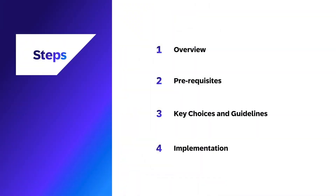Our discussion will follow these four key steps. First, we'll provide an overview of anomaly detection and its benefits in the SAP ecosystem. Second, we'll cover the essential prerequisites you'll need to have in place, including supported environments and required components. Third, we'll explore key choices and guidelines that impact your implementation, including algorithm selection and parameter optimization for different use cases. Finally, we'll dive into implementation approaches across programming models, providing concrete examples for Python, SQL, and R.